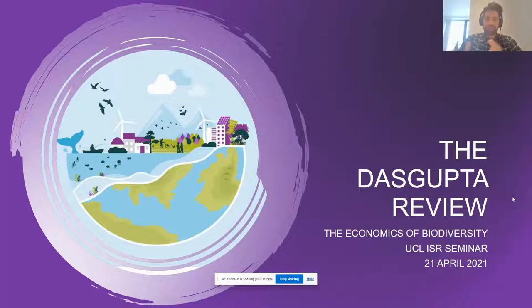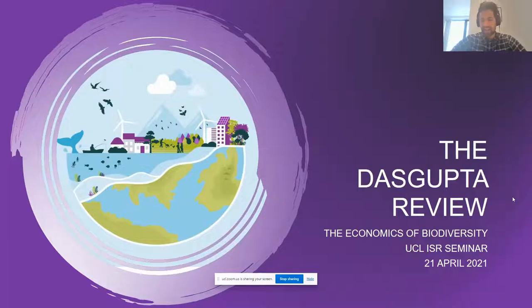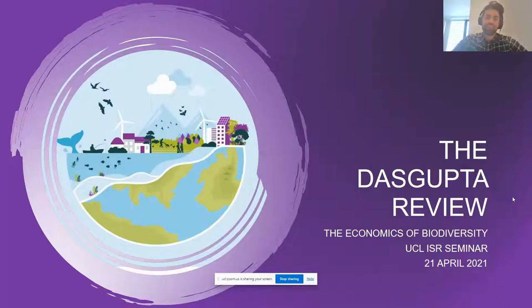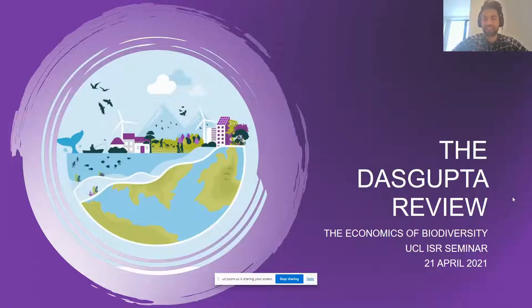As many of you may be aware from the programs by Sir David Attenborough or from Greta Thunberg and others, for the first time in 65 million years the number of species worldwide is in mass decline. According to some scientists, we're entering the sixth mass extinction of our planet. Study after study have highlighted the extent to which biodiversity across the world has been depleting for some time.